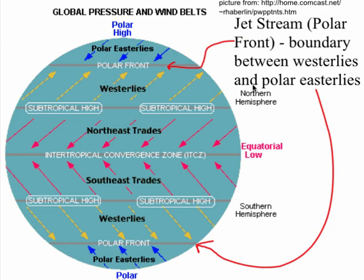If you want a little fun fact: the polar jet stream or the polar front is the boundary between the polar easterlies carrying cool air and the westerlies, which often carry warmer air. So in the winter, when we get all those polar vortexes, it's when this boundary is pushed further south than us.